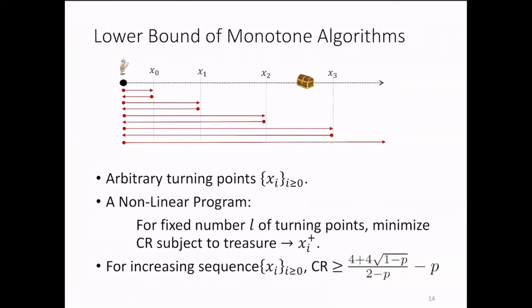Now, how can we show that the previous monotone algorithm is optimal in the family of monotone algorithms? The result of ours is quite technical. The high level idea is to identify such an algorithm by its turning points, call them x sub i, an infinite sequence, and then for any fixed natural number, l,